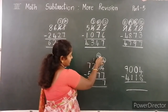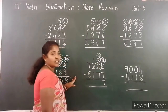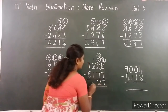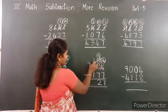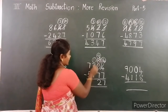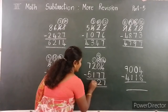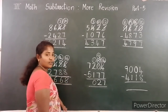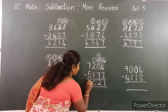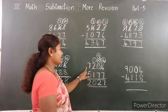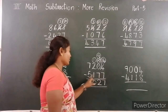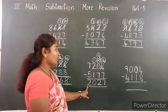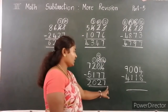Tens place: 9 minus 7 is 2. Hundreds place: 1 minus 1 is 0. Thousands place: 7 minus 5 is 2. 7,204 minus 5,177 — the difference is 2,027.